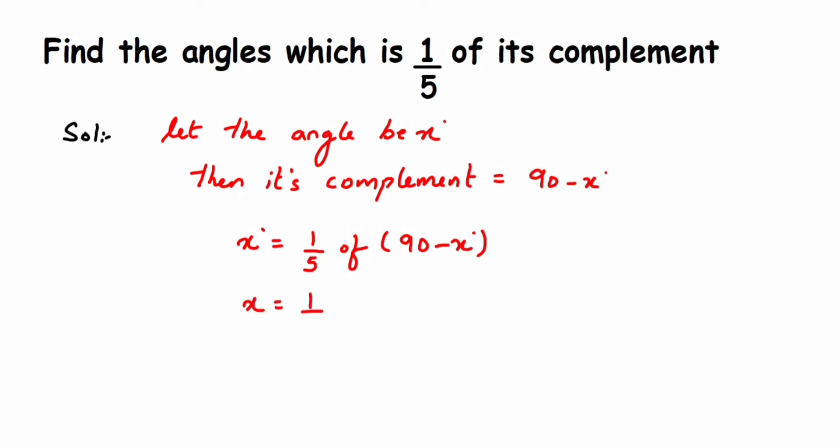Now this five is in division, right? When you take it to the other side, it comes in multiplication. You can do it another way—multiply one-fifth with 90 and one-fifth with x—but those steps are a little longer. I'm just taking five to the other side, so the division becomes multiplication.